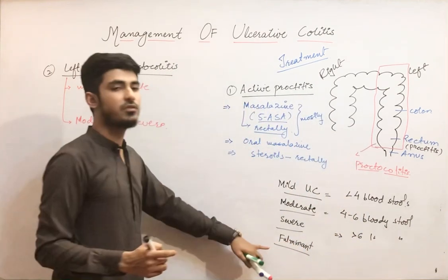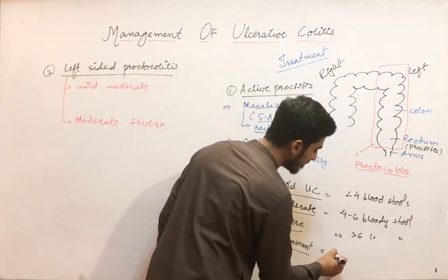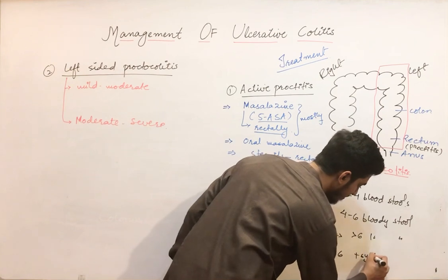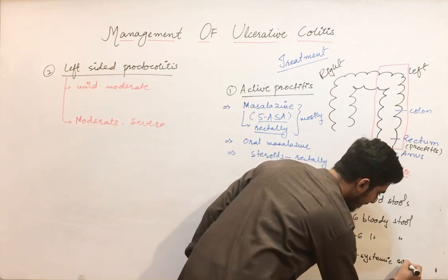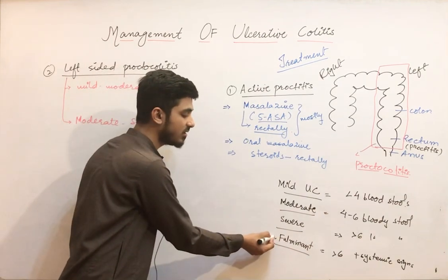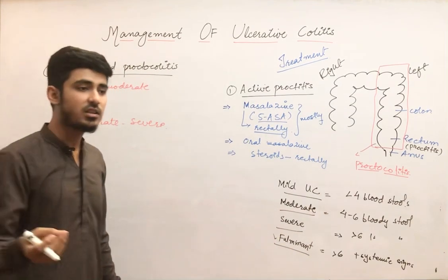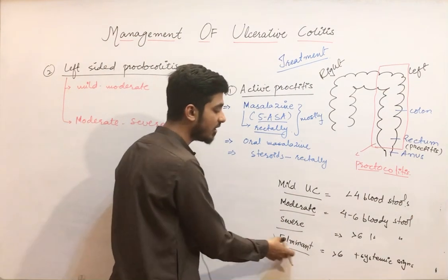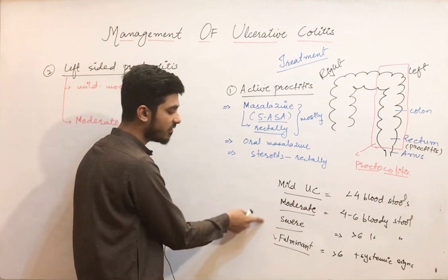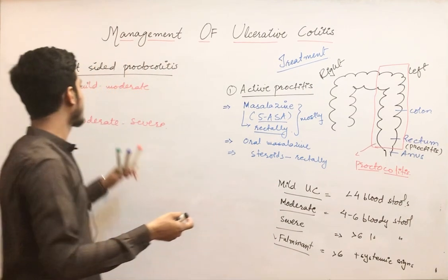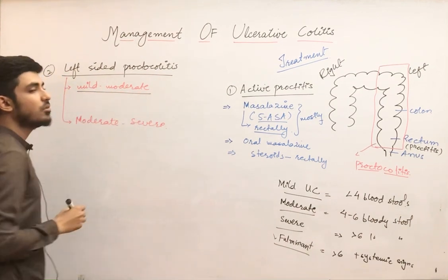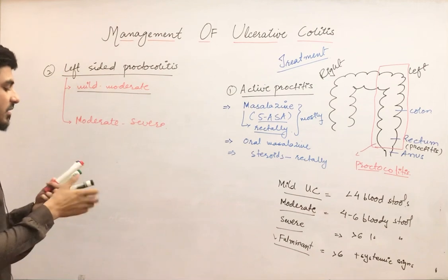Fulminant is greater than six bloody stools plus systemic signs. This is a very severe case that has to be managed urgently in the hospital. But first, let us discuss the mild-to-moderate cases.